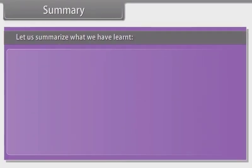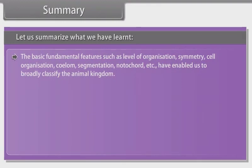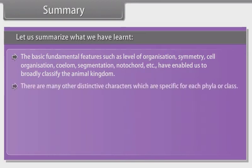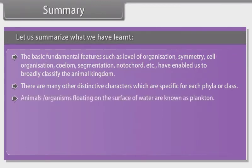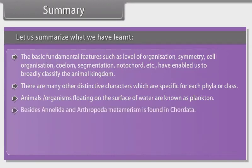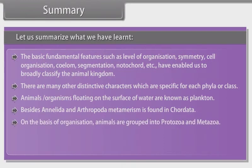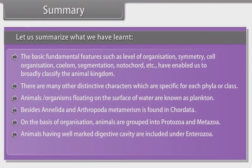Let us summarize what we have learnt. The basic fundamental features such as level of organization, symmetry, cell organization, coelom, segmentation, notochord, etc., have enabled us to broadly classify the animal kingdom. There are many other distinctive characters which are specific for each phyla or class. Animals or organisms floating on the surface of water are known as plankton. Besides Annelida and Arthropoda, metamerism is also found in Chordata. On the basis of organization, animals are grouped into Protozoa and Metazoa. Animals having well-marked digestive cavity are included under Enterozoa.